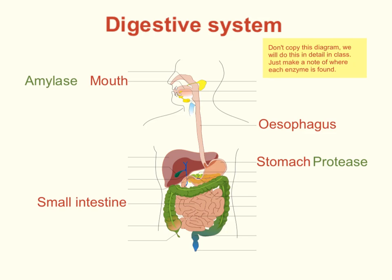We also have lipase enzymes. Lipase breaks down fats and oils — the proper name for fats and oils is lipid, which is where the word liposuction comes from. Lipase breaks down fat molecules and the two products of fat digestion are fatty acids and a molecule called glycerol. All of those molecules — glucose, amino acids, fatty acids, and glycerol — are small enough to be absorbed from inside the small intestine into the bloodstream.